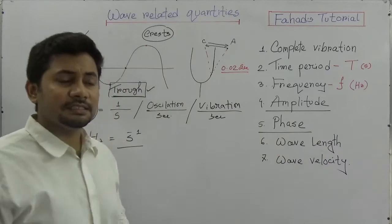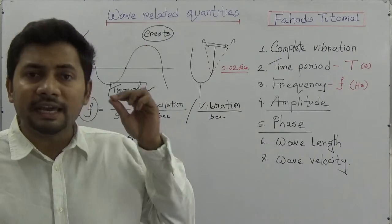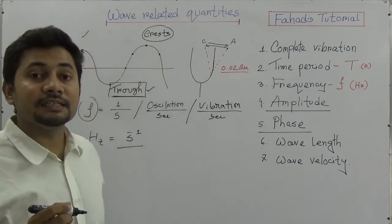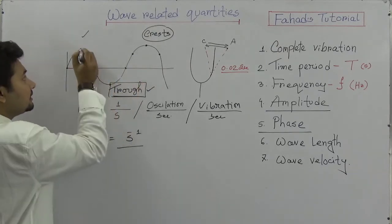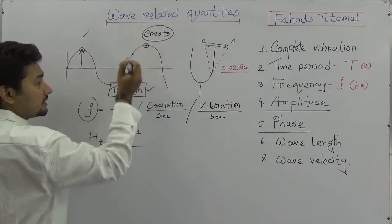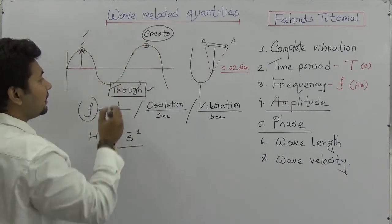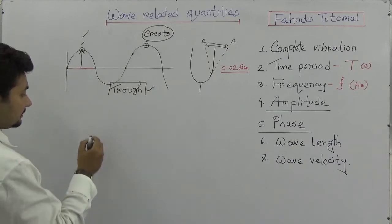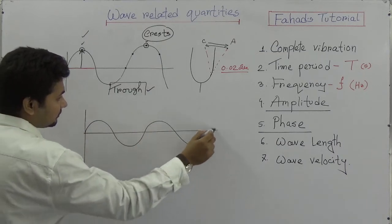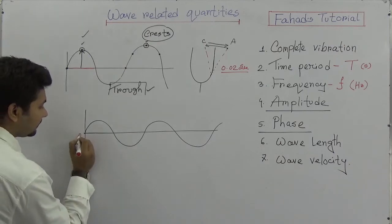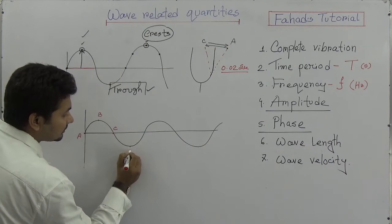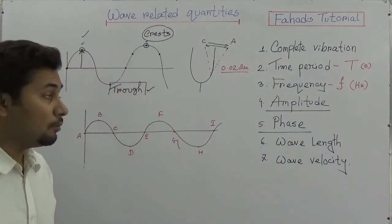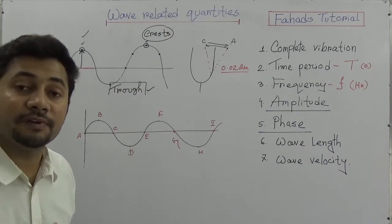Phase is the instantaneous condition of a wave particle at any position. So anywhere along the wave we can identify a phase, and where the phase is similar we say those particles are in the same phase. Let me draw a transverse wave and label the points: A, B, C, D, E, F, G, H, I. Now we see which alphabets show the same phase of the wave transmitting particles.